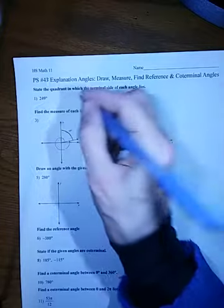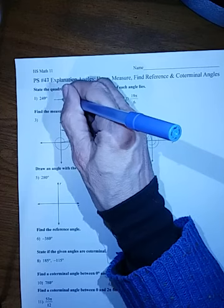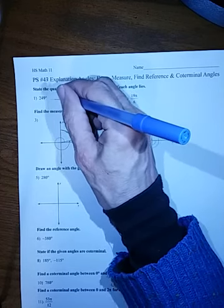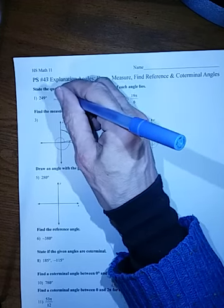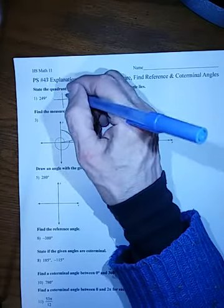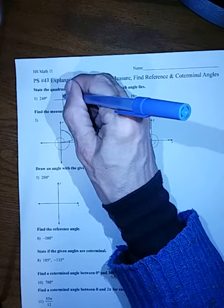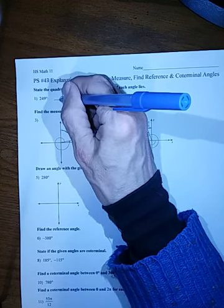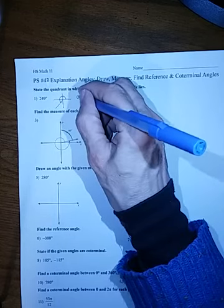So we have an angle 249, and we want to know where the terminal side is. First of all, angles standardly always start on the positive x-axis. Positive angles go in the counterclockwise direction. Negative angles go this way. So since this is a positive angle, it's going to go around this way. Each quadrant is 90 degrees, so that would be 90. Another 90 is 180, and then this would be 270. This is somewhere in between there, so that would end up in this quadrant. That means it lands in quadrant 3.